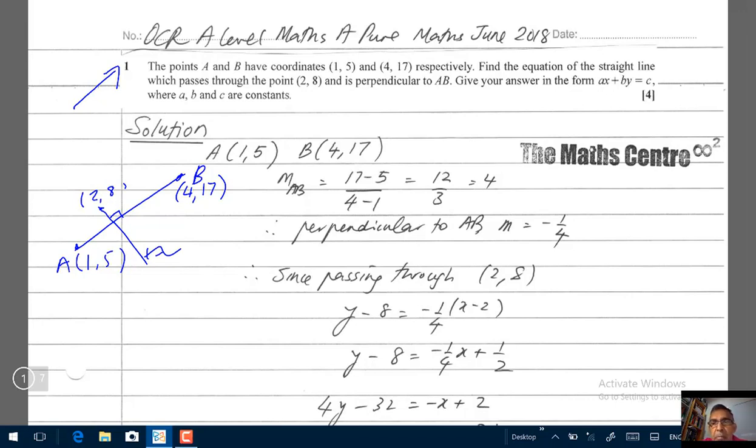Give your answer in the form AX plus BY equals to C. So we asked to find the equation of a straight line. So you need the gradient and you need a point through which it passes. Now we have the point 2, 8. We need the gradient of the line.